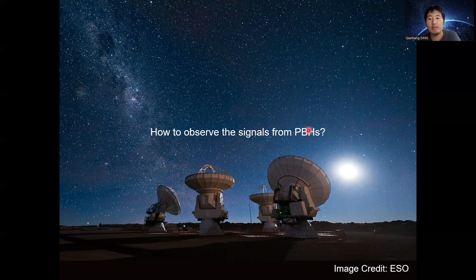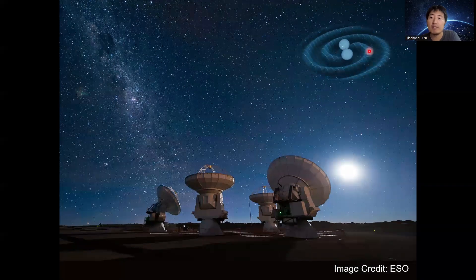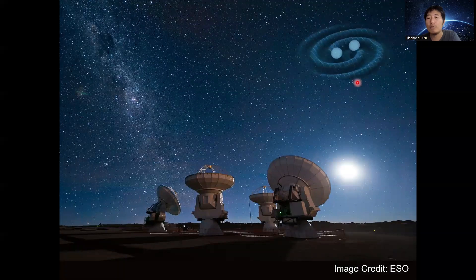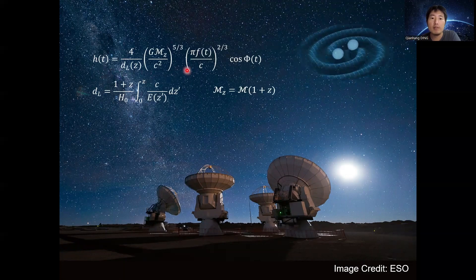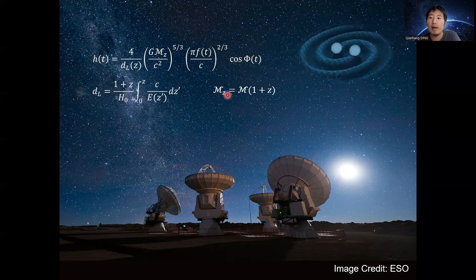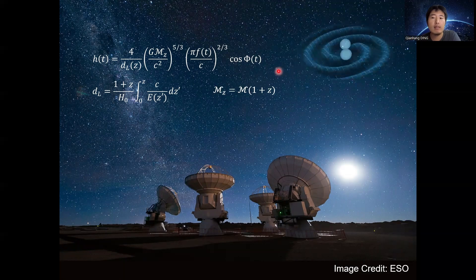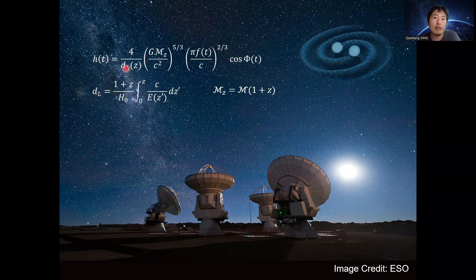However, at such high redshift, the signal is very difficult to detect. But we have gravitational waves, so we can try to study gravitational waves from primordial black hole binaries. What are the signals from primordial black hole binaries? These are gravitational waveforms. From the gravitational waveforms, we can obtain some observables. For example, from the gravitational waveform phase, we can obtain the redshifted mass of these primordial black hole binaries, and from the amplitude we can obtain the luminosity distance from the binary to Earth.